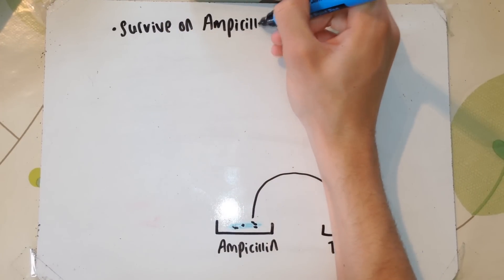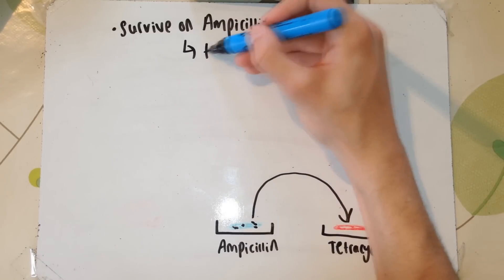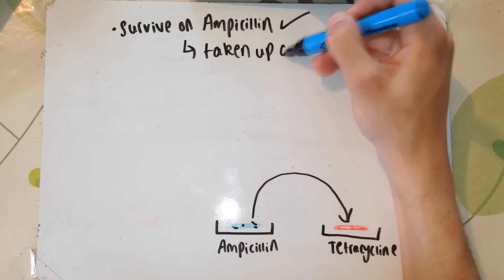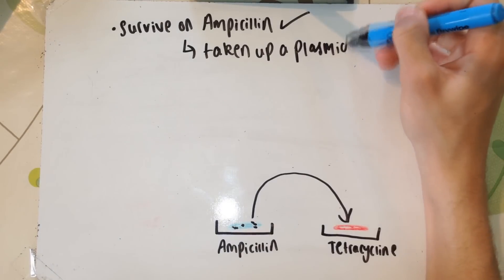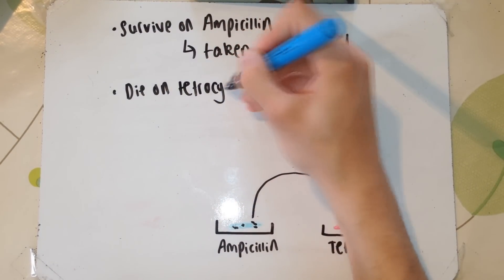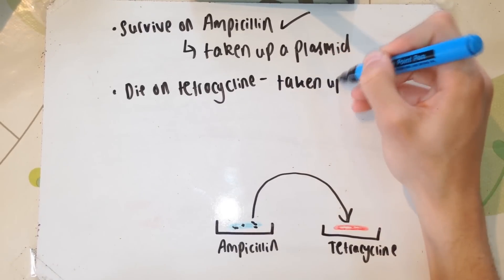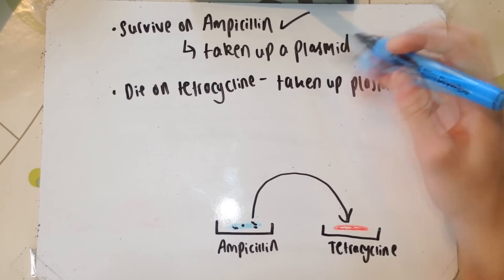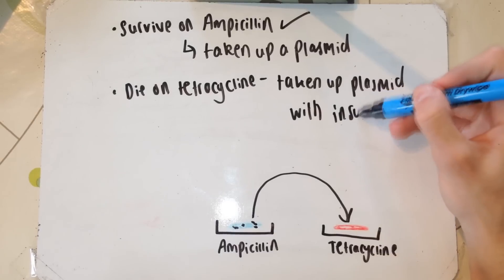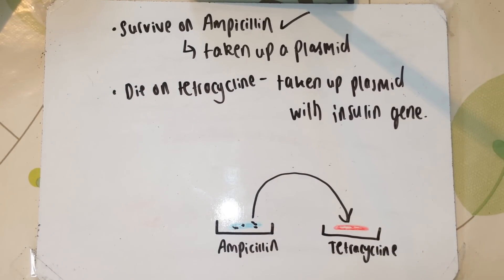So there we have it. In this video we've talked about sticky ends, all the different enzymes, complementary DNA, recombinant DNA, insulin, and genetic engineering as a whole — apart from the golden rice topic, which I'll make another video on. If you like this, please give it a like, subscribe, and comment if you didn't understand anything. Comment any other topics you want me to cover.